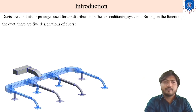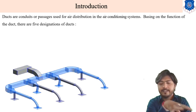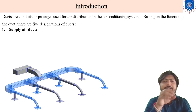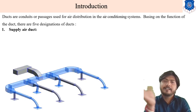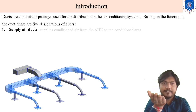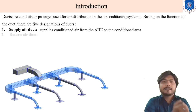There are five designations of duct. The first type is the supply air duct, which supplies air from the AHU to the conditioned space — also called the main duct. It supplies conditioned air from the AHU to the conditioned area. The second is the return air duct.